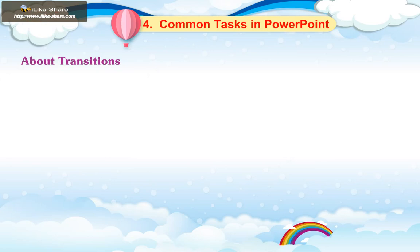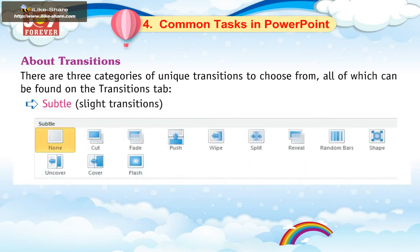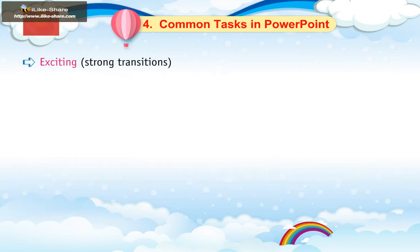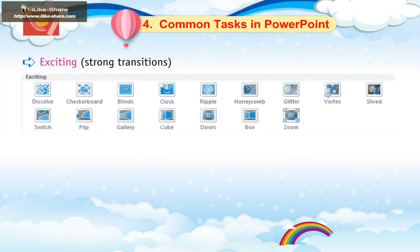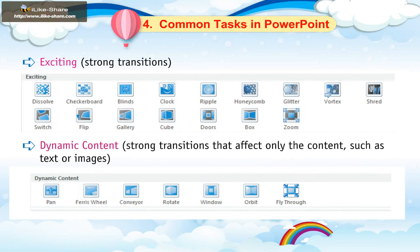About Transitions: There are three categories of unique transitions to choose from, all of which can be found on the Transitions tab. Subtle: slight transitions. Exciting: strong transitions. Dynamic Content: strong transitions that affect only the content such as text or images.